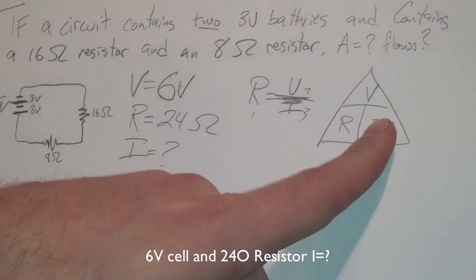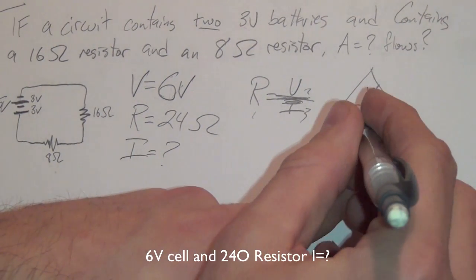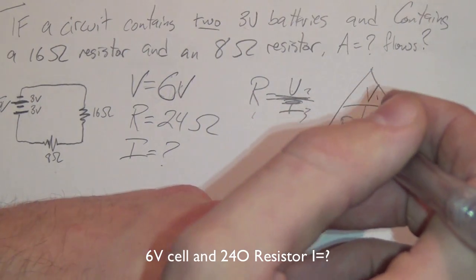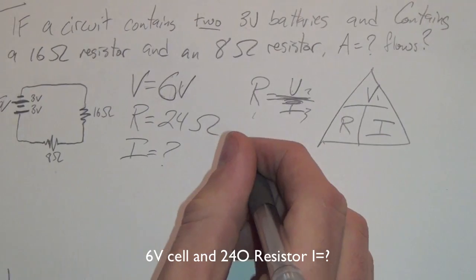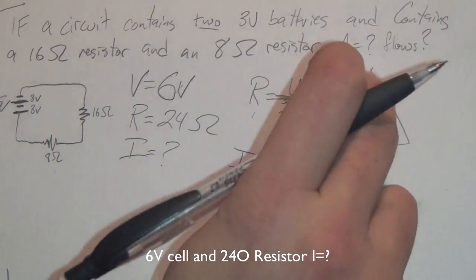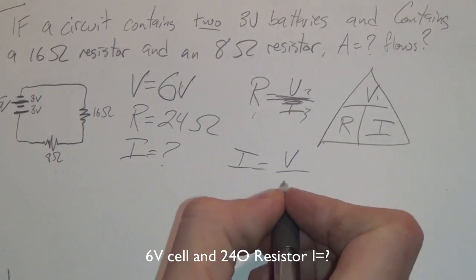So we are looking for the current. I equals V over R. Right? Is that the way things go here? Yeah. Block it off. I equals V is over top of R. So voltage over resistance.